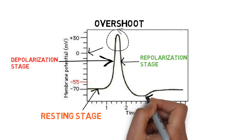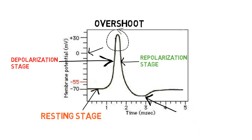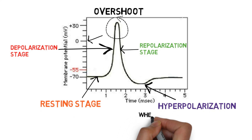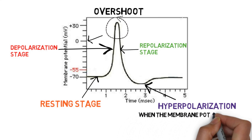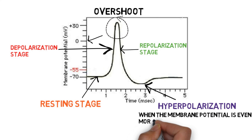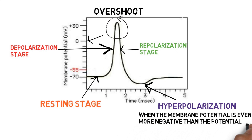There is also another stage called hyperpolarization — this is the stage when the membrane potential is even more negative than at rest. This completes our graph. Now let's see the pictorial representation of the stages.